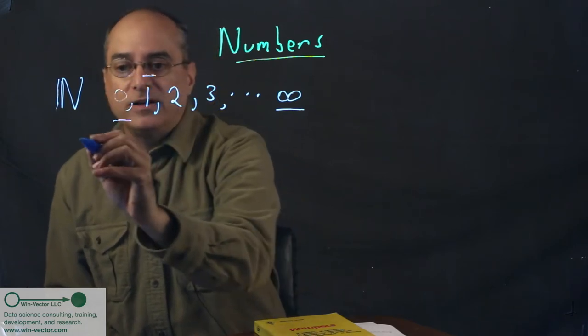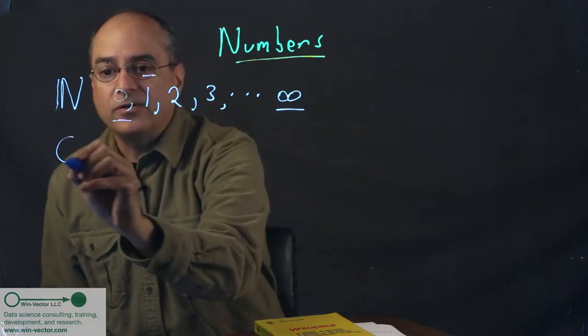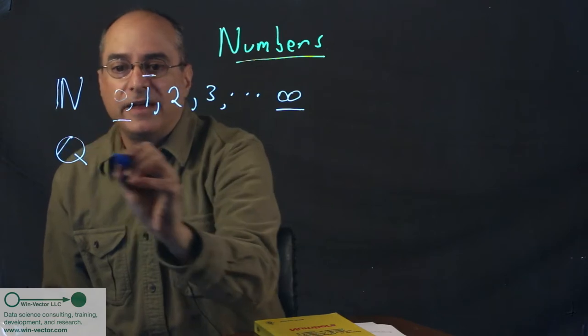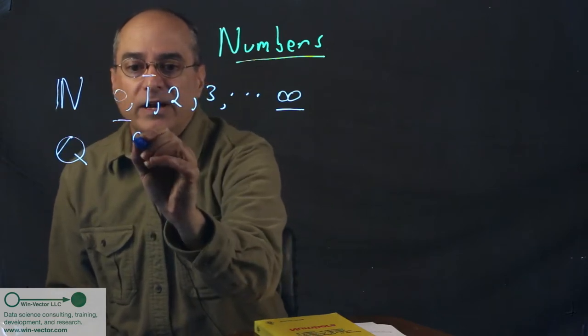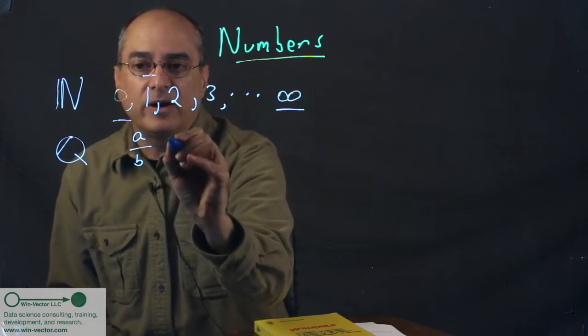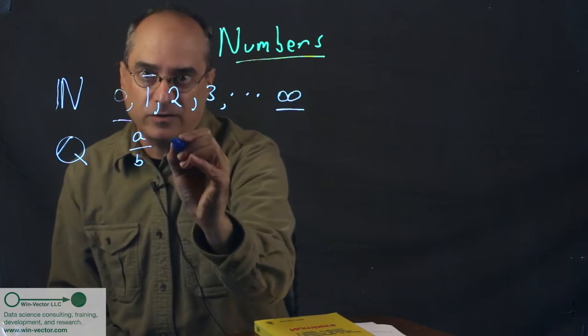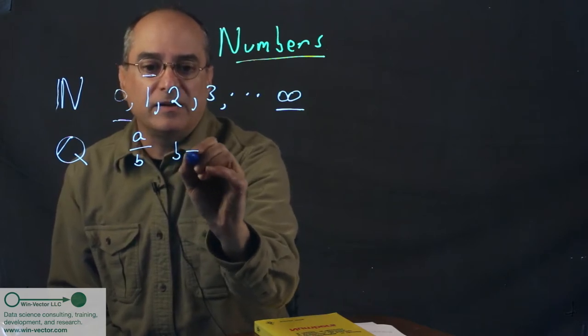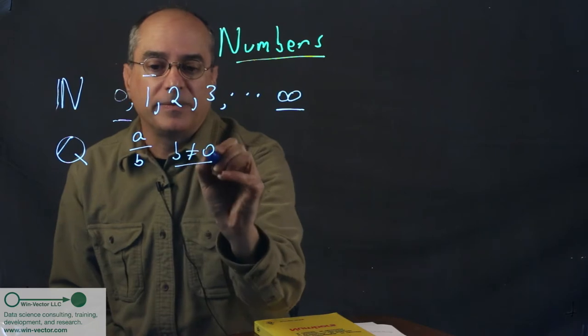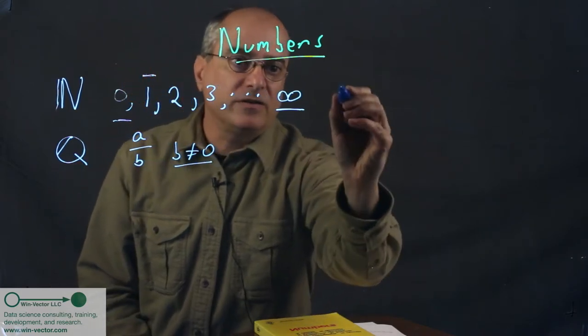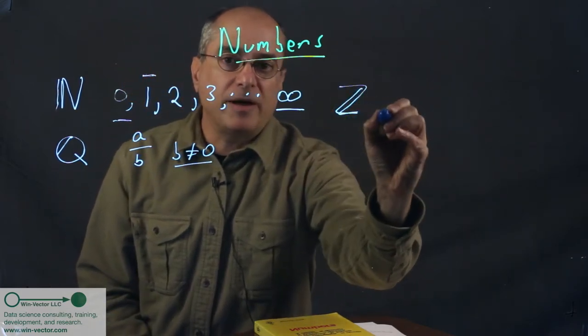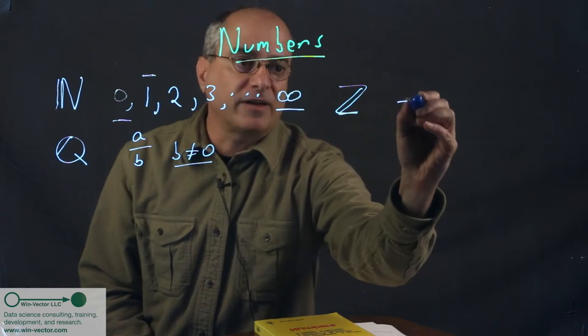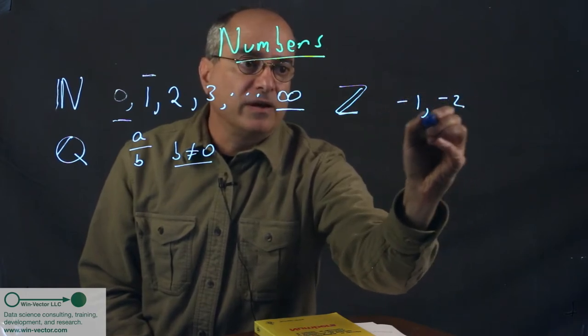Now we then move on to another set of numbers, the rationals. And these are all the numbers that can be written as a over b, where a and b are integers. And b doesn't equal zero. Now again, the integers is just the natural numbers plus numbers of minus signs.